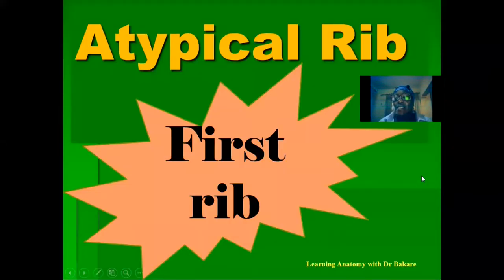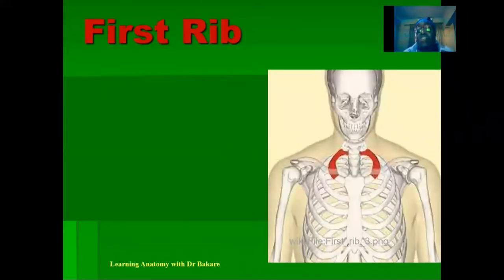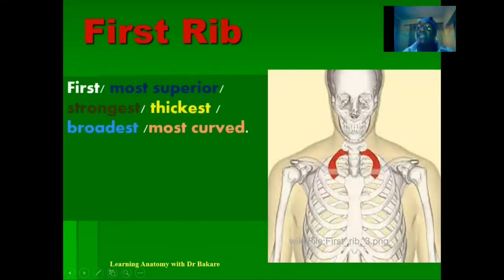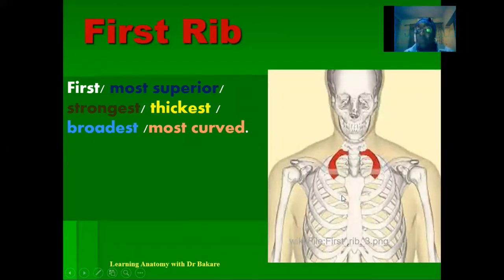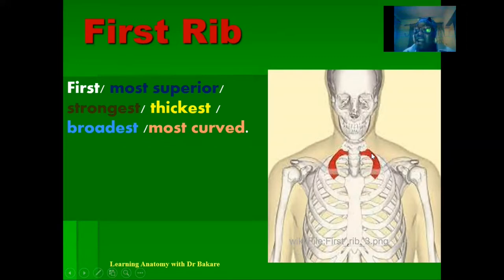Welcome. Let's look at the first rib. The first rib is one of the atypical ribs. The first rib, as the name implies, is the first out of the 12 pairs of ribs. It is also the most superior rib, which is logical. It is the strongest, the thickest, the broadest, and also the most curved rib. It is most curved because it has a short distance to pass through.